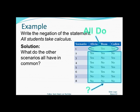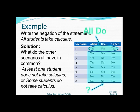So a better solution that takes into consideration all the different scenarios is to say that at least one student does not take calculus. Could be two students, could be three, but at least one student is not taking calculus. Or equivalently, some students do not take calculus.